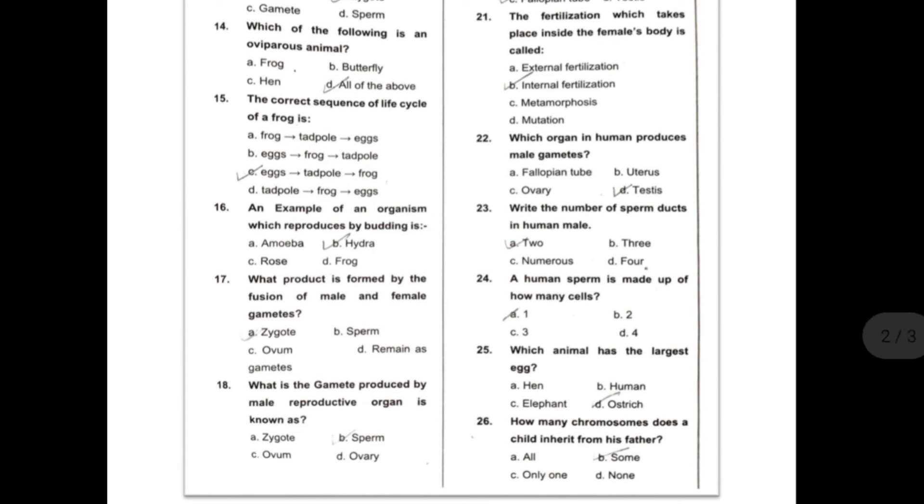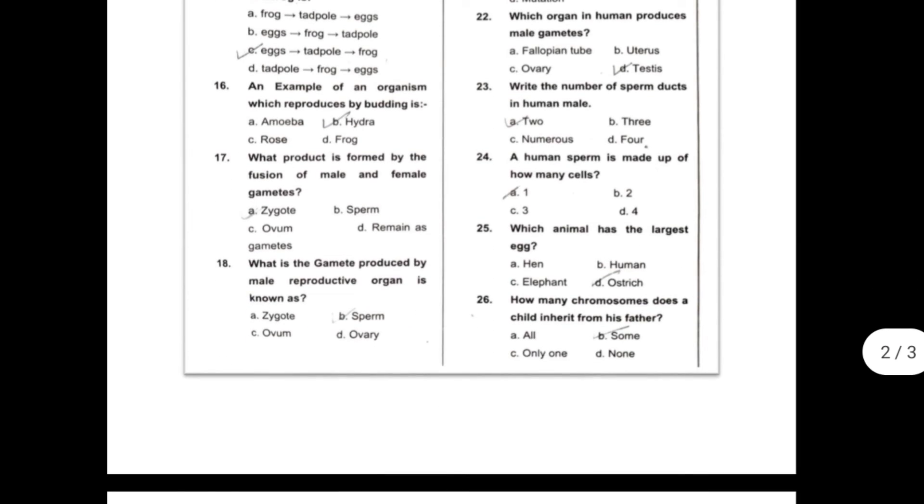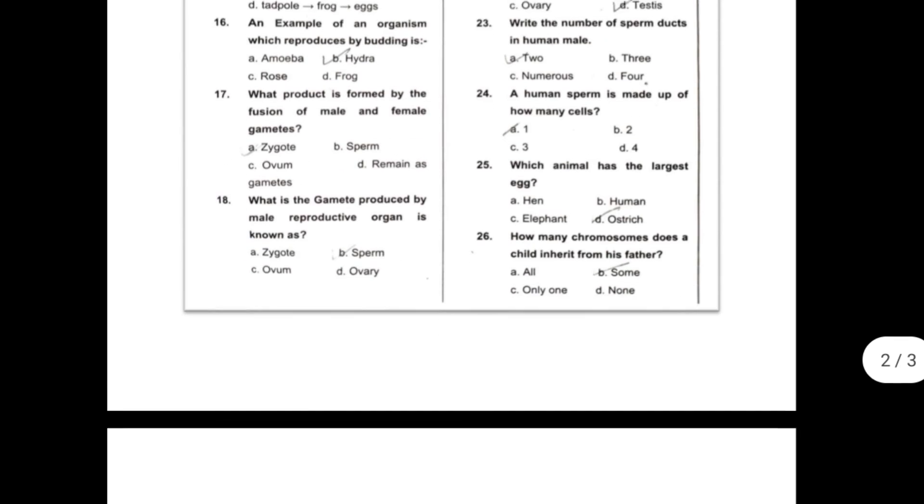Twenty-one, the fertilization which takes place inside the female's body is called? The answer is internal fertilization. Twenty-two, which organ in human produces male gametes? The answer is testes.